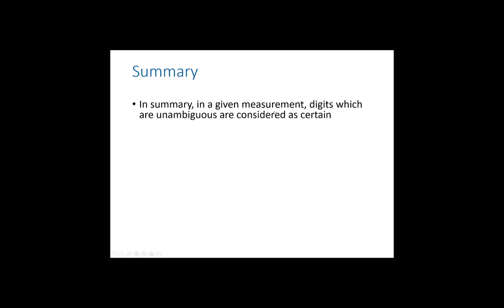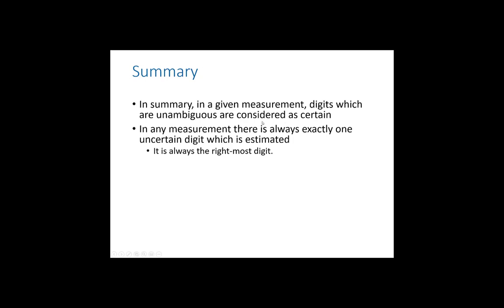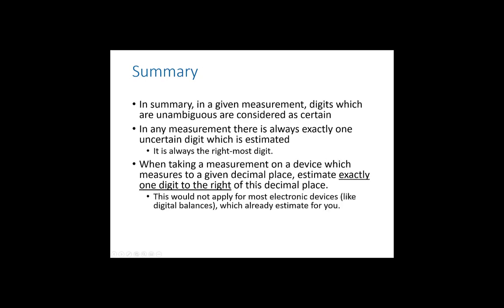To summarize: in a given measurement, digits you are certain of are called certain — they are always at the left. There is always exactly one uncertain digit, and it is always the rightmost digit. For equipment with markings, find the smallest interval and go exactly one decimal place to the right of that. For electronic devices, the last displayed digit is already the uncertain digit. I'll end here, and when we pick up we'll look at the next important chemistry topic: significant figures. Thank you.